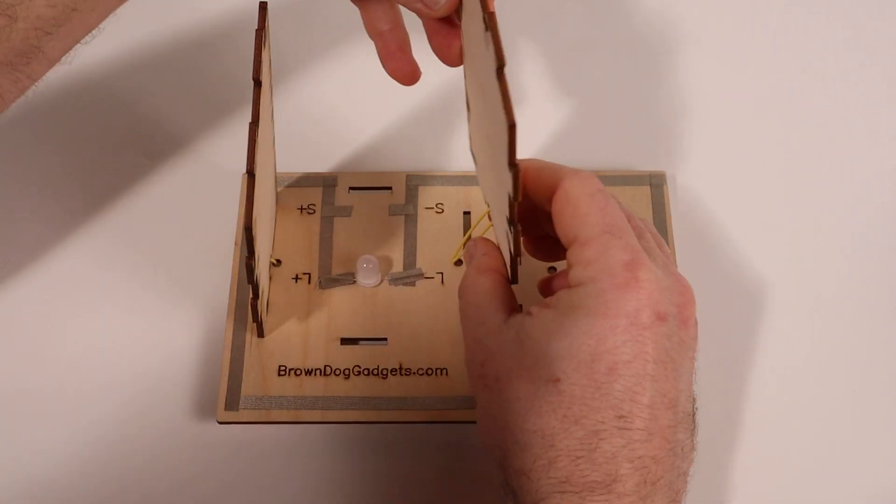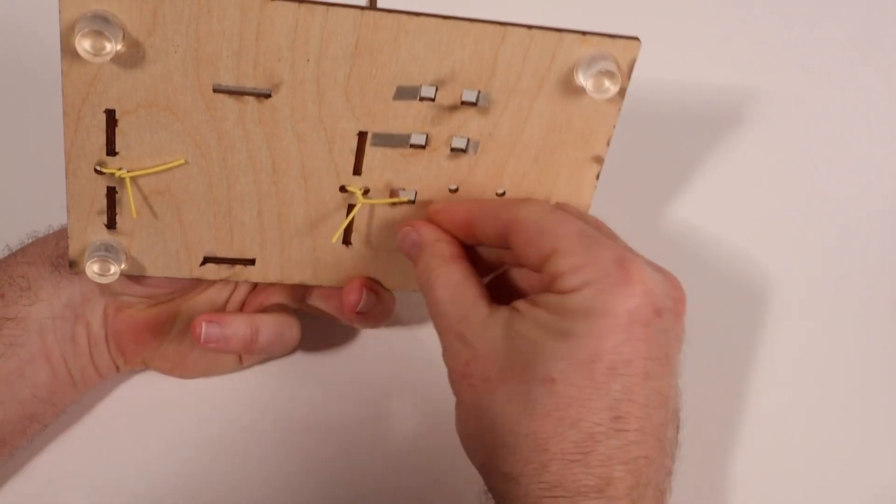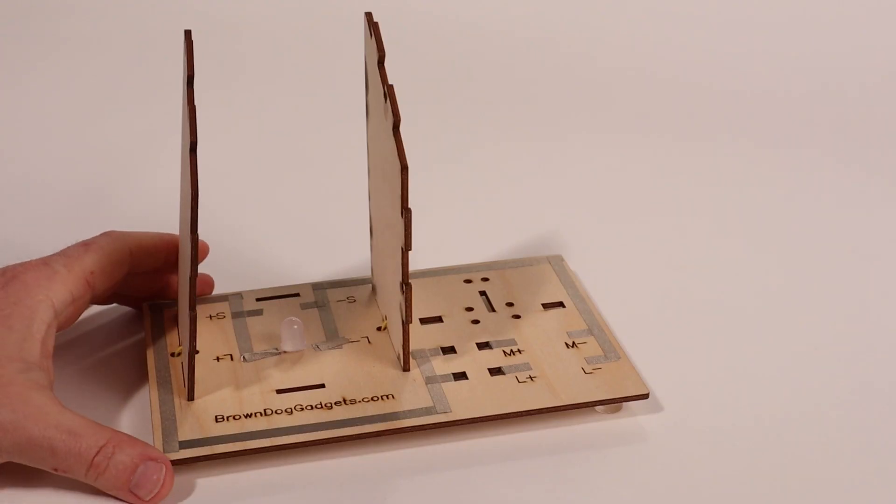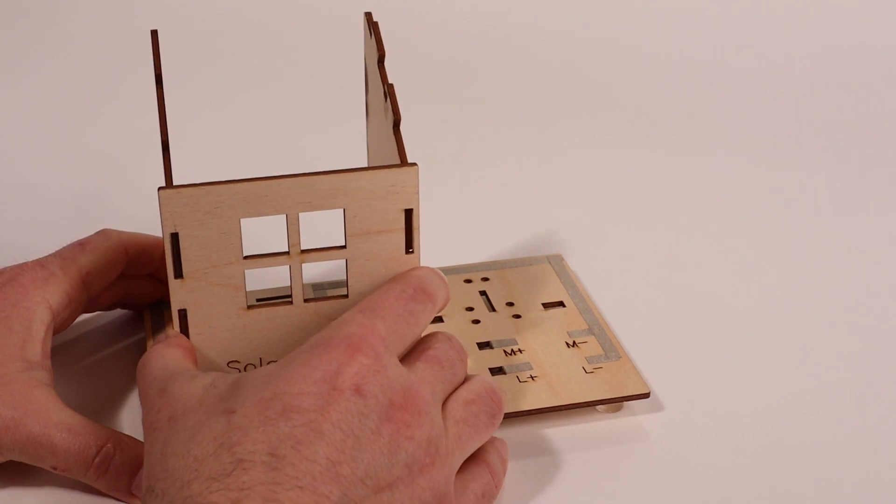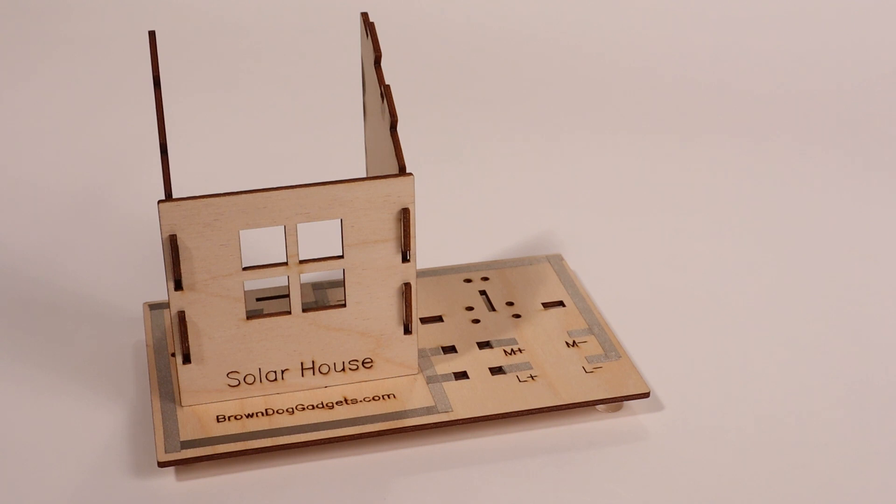Repeat the same process with the second wall. Now we'll add the front of the house. Place the four slots of the house front over the four tabs of the side walls and then slide the house front down.